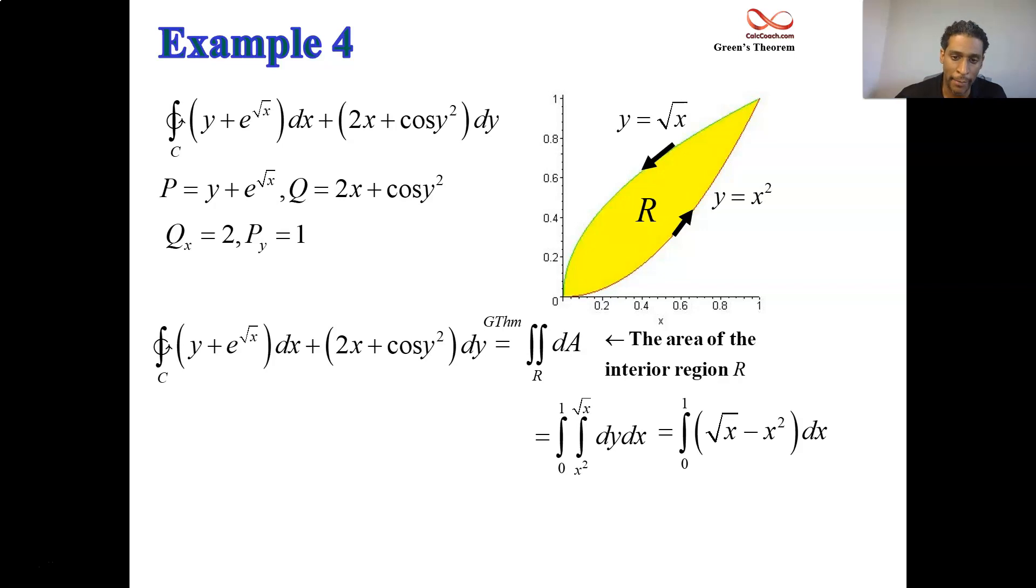And so we have then x to the 3 halves times 2 thirds, and then minus x cubed over 3. And when you put a 1 in, you get 1 third. When you put a 0 in, you get 0. 2 thirds minus 1 third. So 1 third. That's it. You did it.